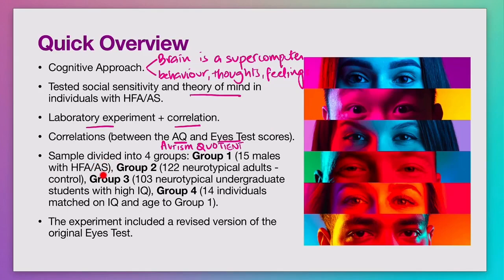Asperger's syndrome used to be classified as a separate syndrome in which autistic traits were visible. However, now, 20-plus years later, Asperger's is associated as part of the autism spectrum and is no longer a separate syndrome. Group two comprised of what we call neurotypical adults — essentially people without any sort of autism syndrome, disorder, or condition.